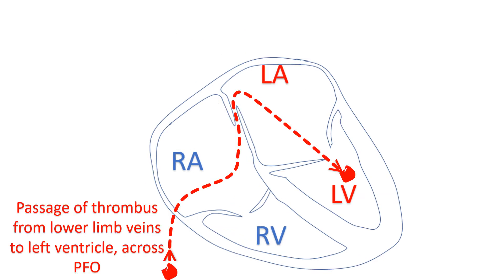A small PFO cannot produce much problem due to blood shunting across it unless it is stretched open by other diseases. But small clots from lower limb veins or veins of the abdomen can occasionally pass across it to the left atrium. This is a risky situation.